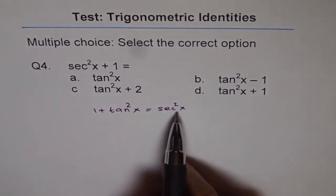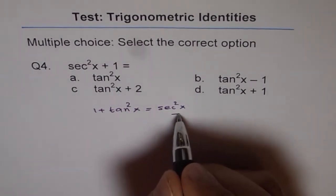So if I want secant square x plus 1, then I am adding 1 to both sides, right?